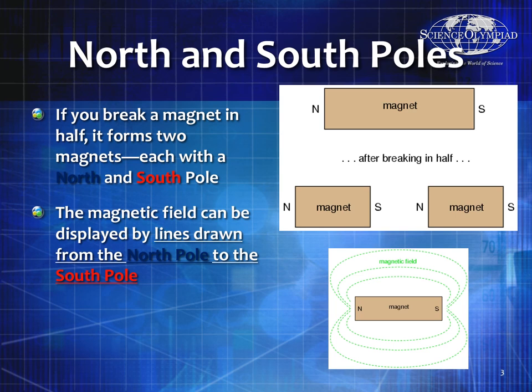We talked about this previously a couple of practices ago. If you break a magnet in two, it forms two magnets, each with a north and south pole. The north and south pole are similar to the positive and negative charges for electric fields. When you break a magnet in half, it forms two other magnets, both with a north and a south pole. The magnetic field flows out in a loop from the north pole around the south pole and back through the magnet.